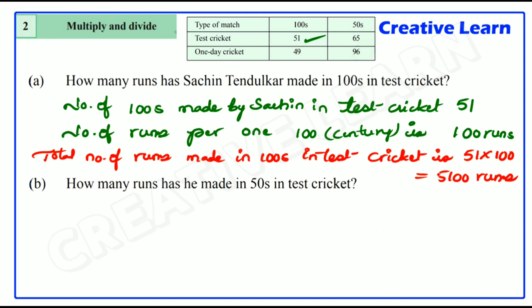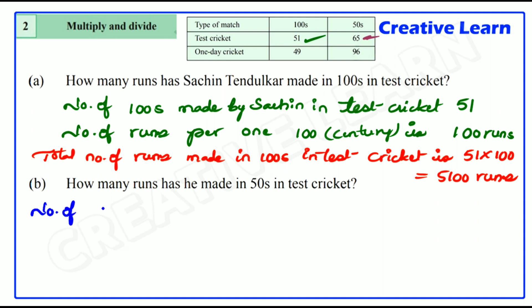That is 51 into 100, which equals 5,100 runs. Total runs made in centuries by Sachin is 5,100. Next question: how many runs has he made in half-centuries in test cricket? In test cricket, he made 65 half-centuries.